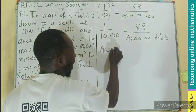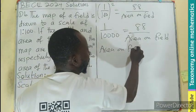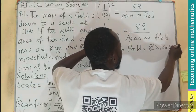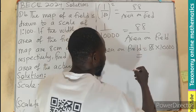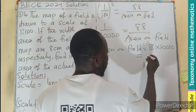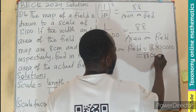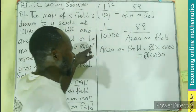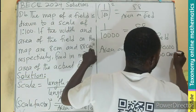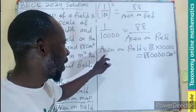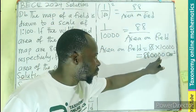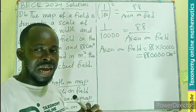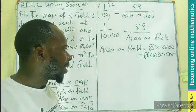So I can say area on field equals 88 times 10,000. That gives you 88 with four zeros, and we are doing our calculation in centimeters squared. So the area on the field is 880,000 centimeters squared.